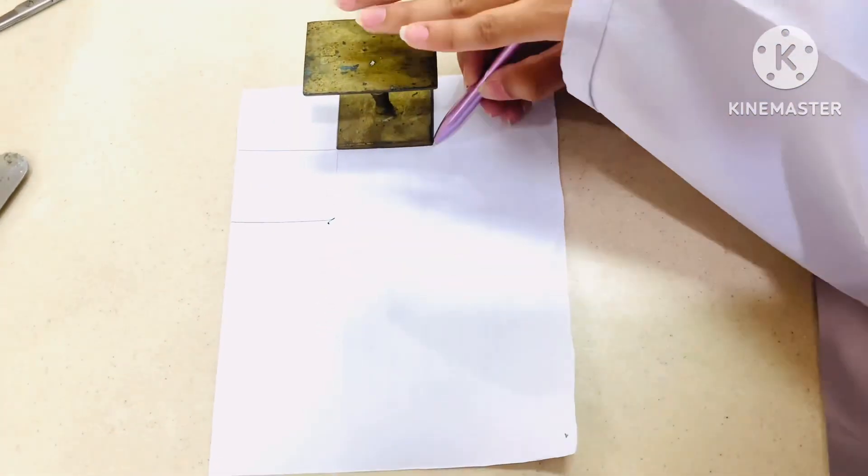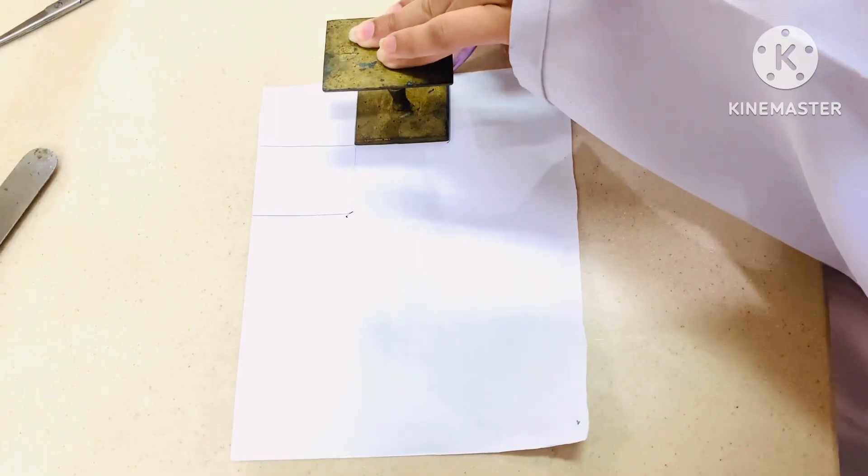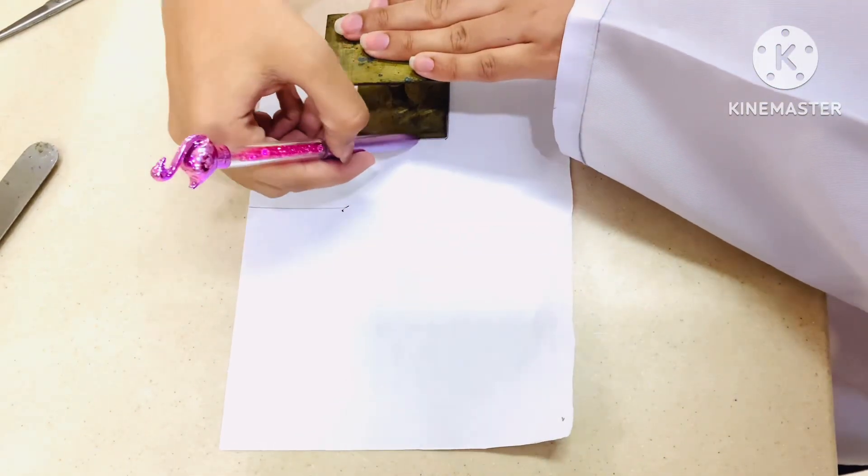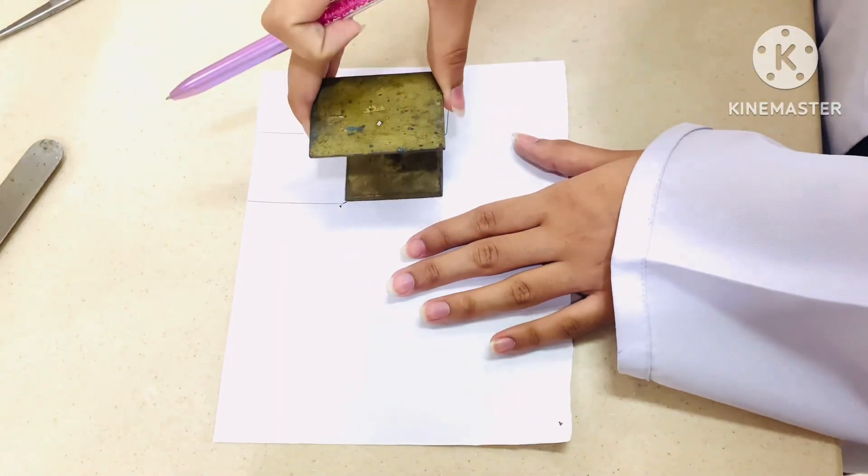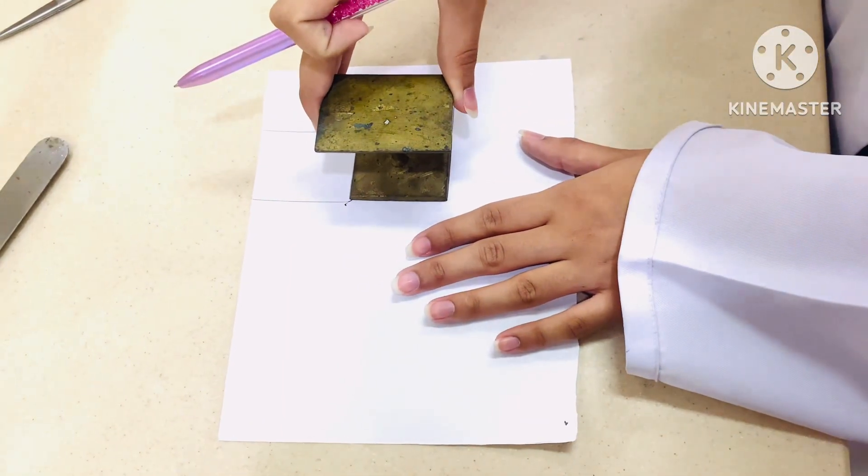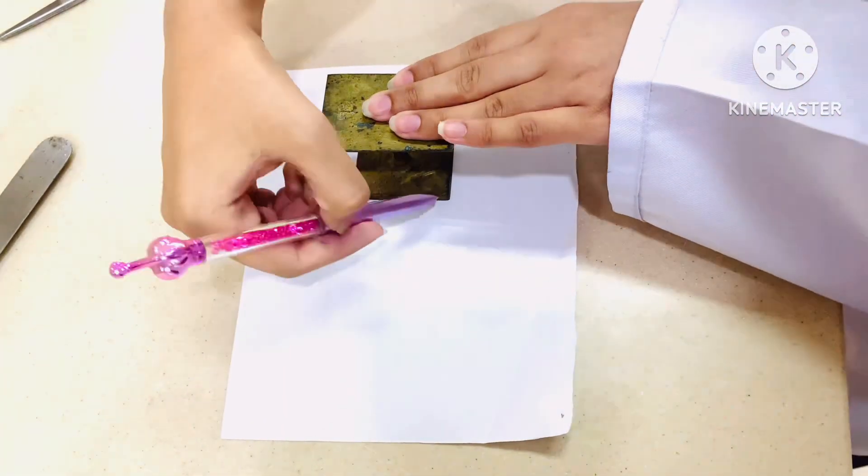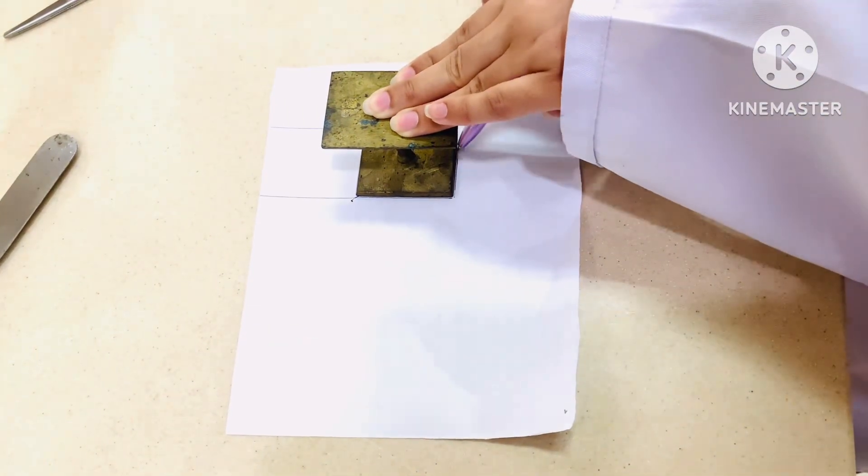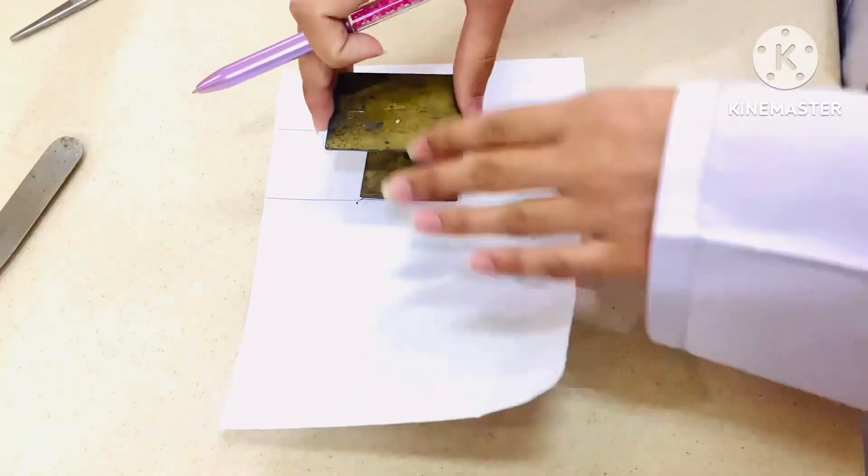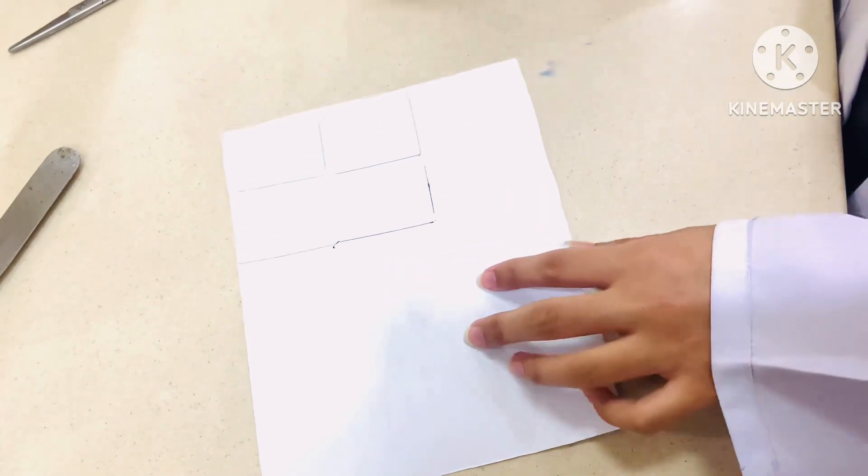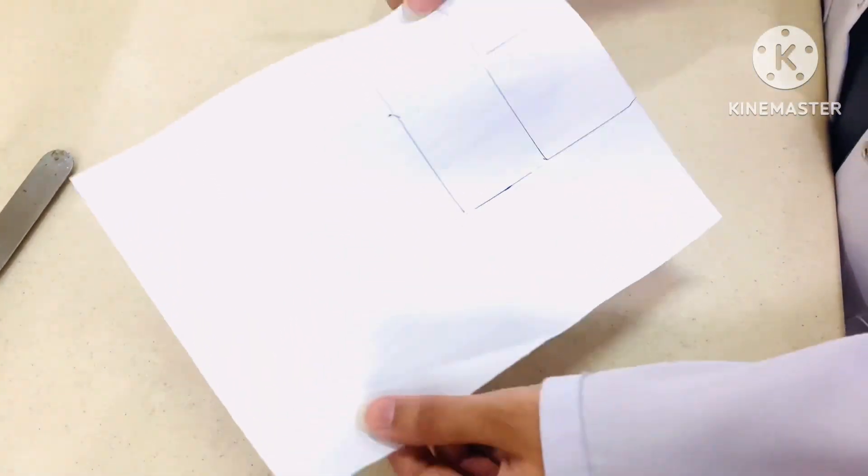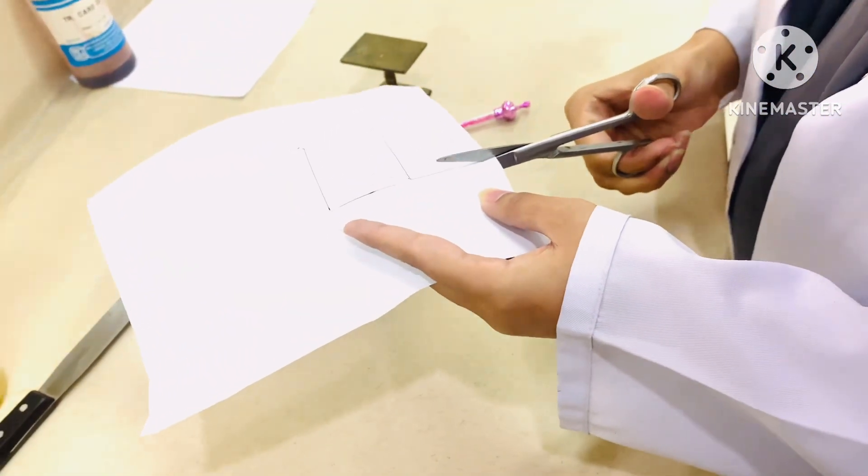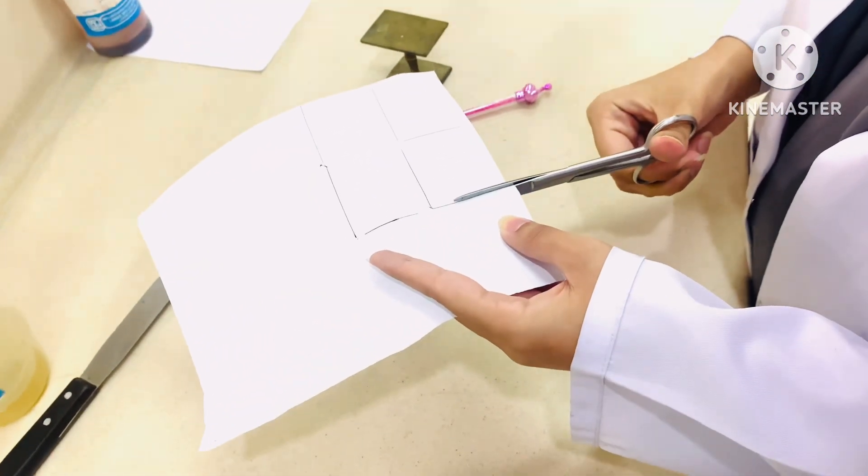For this purpose, I am drawing four boxes. After drawing four boxes, exactly, now I'm drawing the fourth one. After drawing this fourth box, I'm going to cut it into a single paper. Let's start cutting.